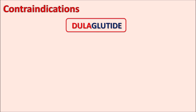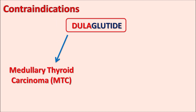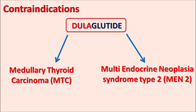This drug is contraindicated in two important conditions. First, it is contraindicated in medullary thyroid carcinoma (MTC), because this drug can increase thyroid cancer risk. Second, it is contraindicated in multiple endocrine neoplasia syndrome type 2, commonly known as MEN2. Both of these disorders may be worsened by Dulaglutide since it can promote thyroid C-cell carcinoma, so in such patients this drug is strictly contraindicated.